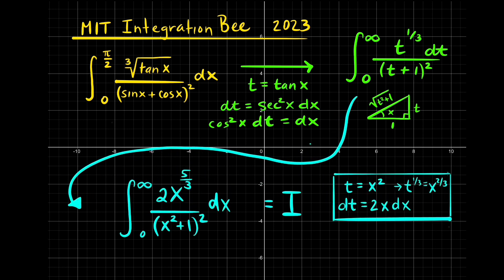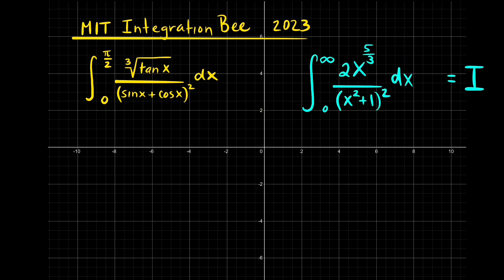By making a substitution of t equals tan of x, we reduce the integral down to the integral from 0 to infinity of t to the 1 third power over t plus 1 squared. And with another substitution, by letting t equal x squared, this becomes the integral from 0 to infinity of 2x to the 5 thirds power over x squared plus 1 quantity squared dx.